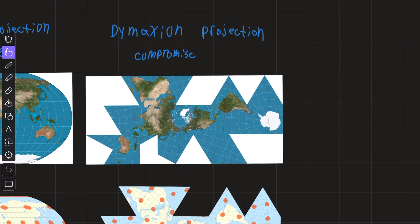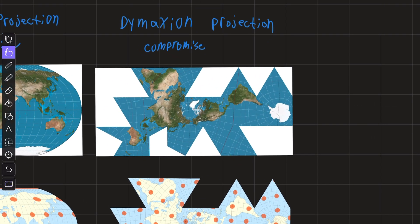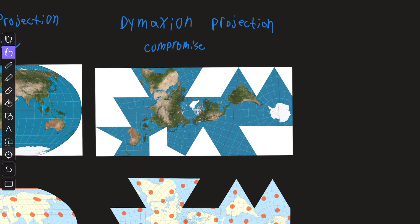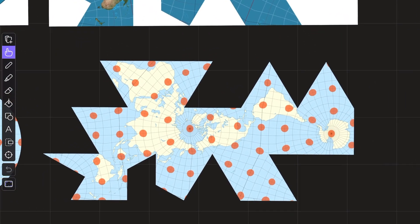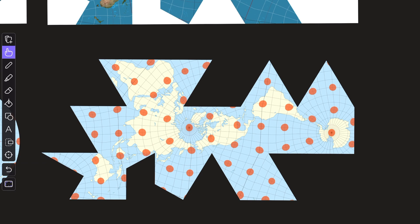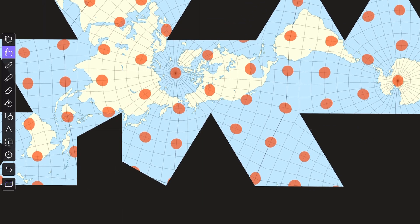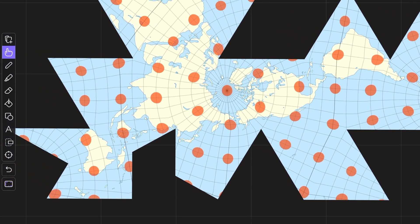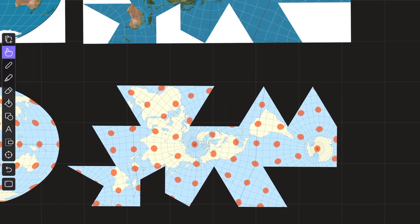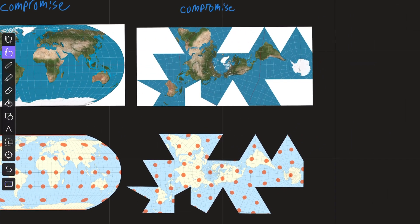Okay, so that's the Dymaxion projection. It is a compromise so it's not conformal or equal area. And here's a visual breakdown of that compromise. So if you really zoom in, we can see that the lines aren't perfectly straight. And also the shapes represented by the red circles aren't perfectly equal. But overall, it isn't too bad. It's a compromise.